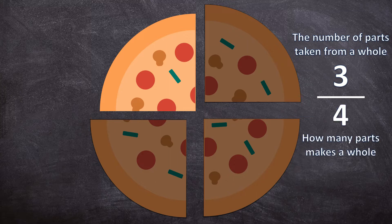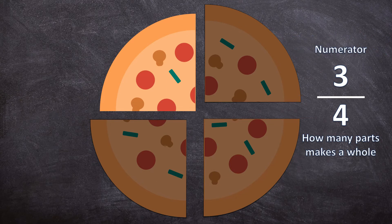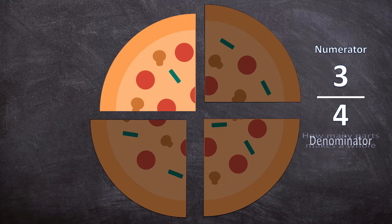Instead of a whole sentence, there is just one word we use when we talk about the top number and one word we use when we talk about the bottom number. The top number — the number of parts taken from a whole — is also called the numerator. And the bottom part — how many parts make a whole — is also called the denominator. Those two words are very important.